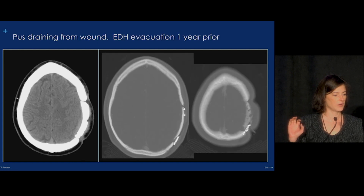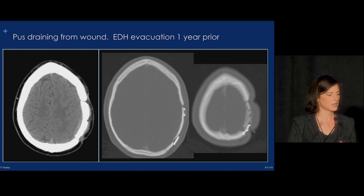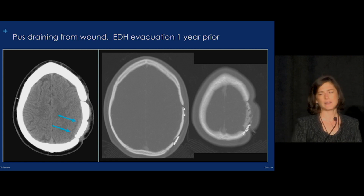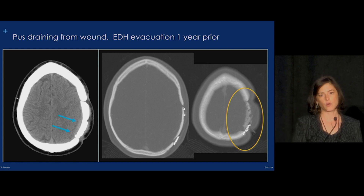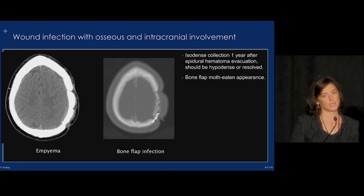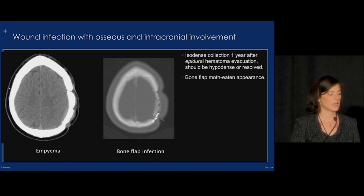The next case shows a patient who had an epidural hematoma evacuated about one year prior, presenting with drainage from the wound. We notice something in the extra-axial space that is iso-attenuating or slightly hyperattenuating to brain — not typical for a subacute hematoma. And the bone flap has a moth-eaten, eroded appearance. This turned out to be an infected craniotomy flap and a subdural empyema. Epidural hematomas usually don't hang around after evacuation. A year-old subdural should be low density, not iso to slightly hyperdense. That abnormal bone flap is the key clue.